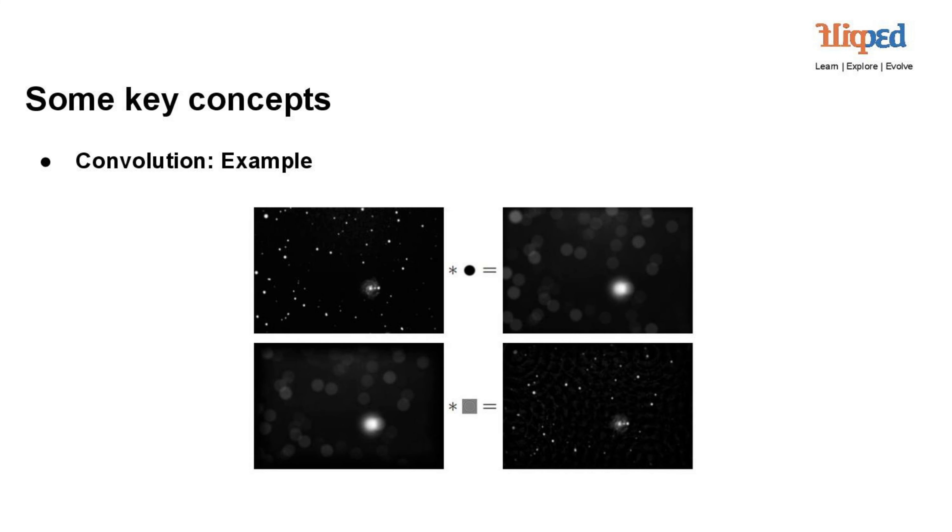This process exemplifies how convolution can be used in image processing to achieve different effects. In the first step, convolution is used to create a blurry effect by blending the image with a specific pattern. In the second step, convolution with a different kernel is used to reverse or mitigate the blurriness and restore the original details.